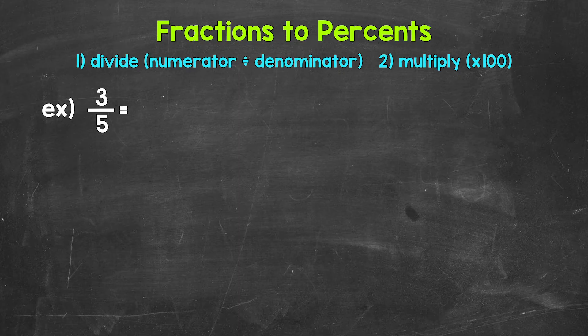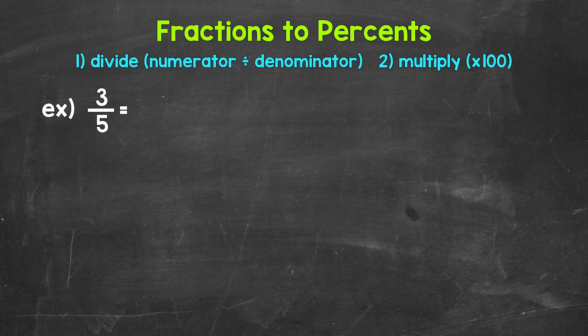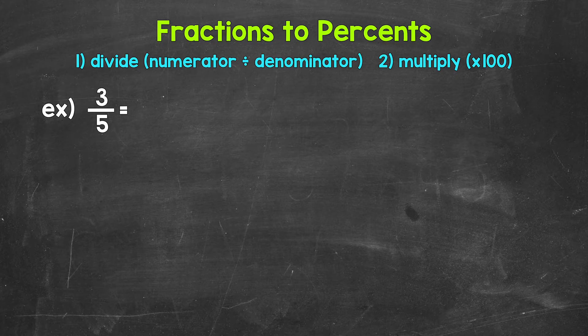This will give us a decimal. Once we have that decimal, we convert it to a percent by multiplying it by 100. And a quick way to multiply by 100 is to move the decimal twice to the right. So we need to start by converting this to a decimal by dividing.